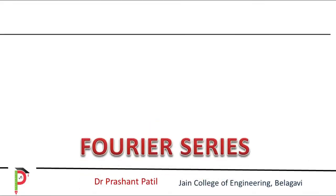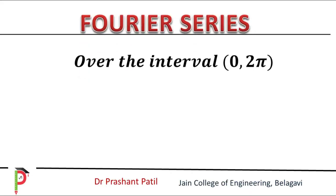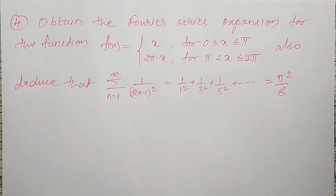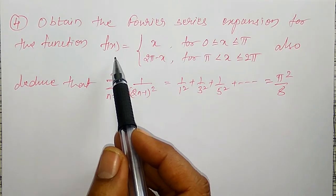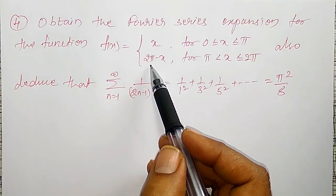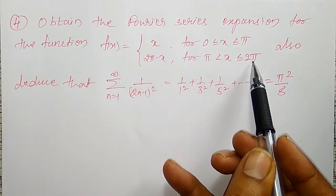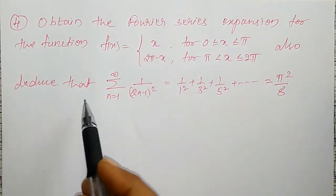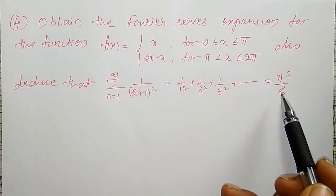In this video, I am going to discuss the Fourier series over the interval 0 to 2π. The problem is: obtain the Fourier series for the function f(x) equal to x for 0 ≤ x ≤ π, and 2π minus x for π < x ≤ 2π. Also deduce that 1/1² + 1/3² + 1/5² + ... = π²/8.